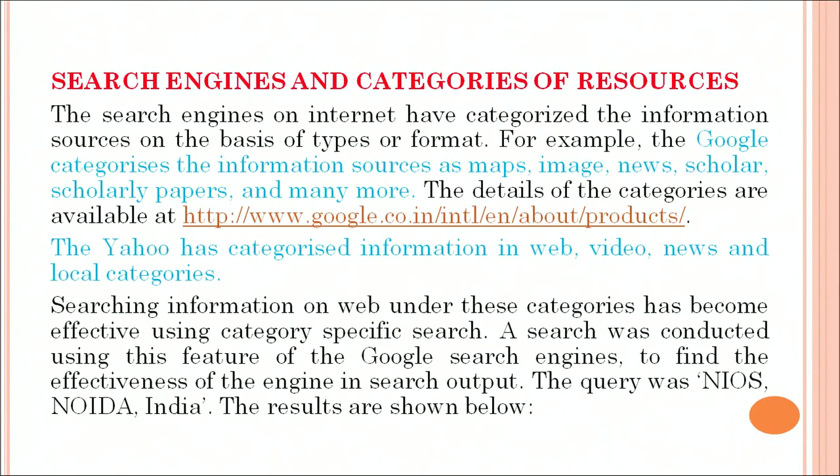Search engines and their categories of resources: search engines on the internet have categorized information sources on the basis of type or format. For example, Google categorizes information sources as map, images, news, scholar papers, and many more things. The details of these categories are available on the link we are showing you.